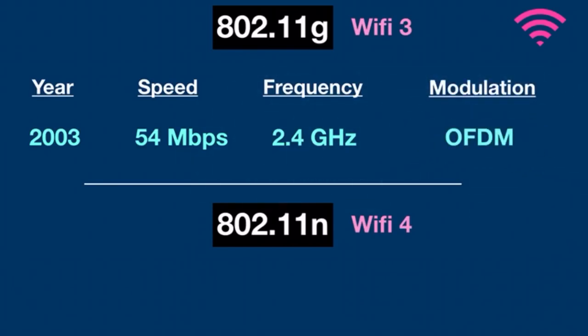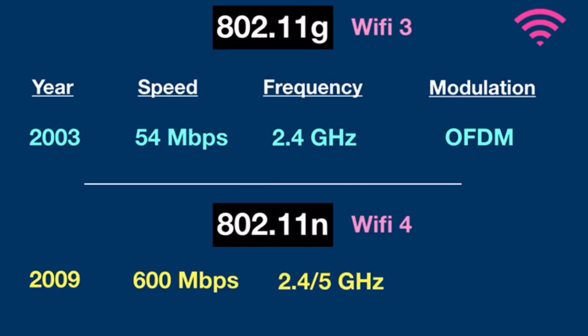802.11n was introduced in 2009. Though it had slow initial adoption, 802.11n supported multi-channel usage. Each channel offered a maximum data rate up to 600 Mbps. It operated on both frequencies, 2.4 and 5 GHz. It used a new technology for modulation — Multiple Input, Multiple Output (MIMO) — along with OFDM.